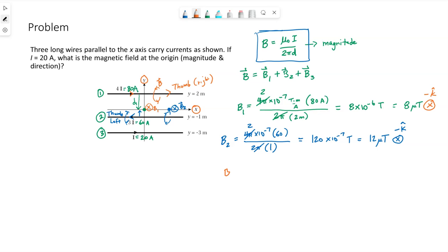B₃, same equation, magnitude first. Mu naught, the current down here is 20 amps. The distance from the wire up to the origin is 3 meters. Again, we don't put the negative sign. We just want the distance. This one I will want my calculator for.